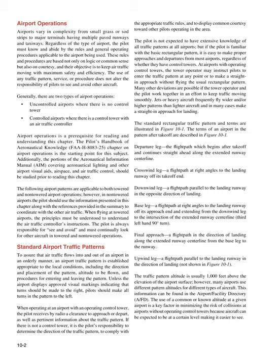The legs of an airport traffic pattern after takeoff are: Departure leg — the flight path which begins after takeoff and continues straight ahead along the extended runway centerline. Crosswind leg — a flight path at right angles to the landing runway off its takeoff end. Downwind leg — a flight path parallel to the landing runway in the opposite direction of landing. Base leg — a flight path at right angles to the landing runway off its approach end, extending from the downwind leg to the intersection of the extended runway centerline. Final approach — a flight path in the direction of landing along the extended runway centerline from the base leg to the runway. Upwind leg — a flight path parallel to the landing runway in the direction of landing.